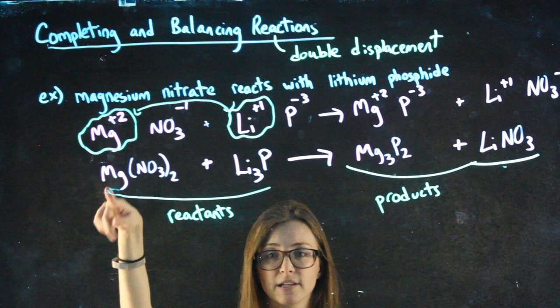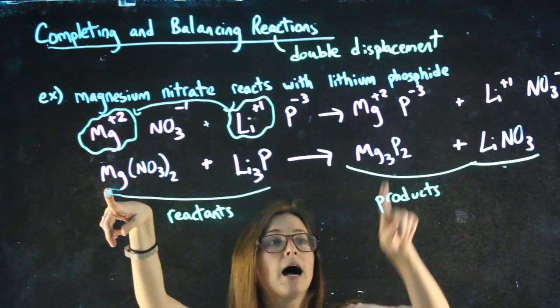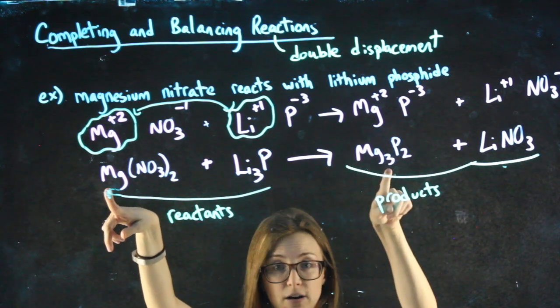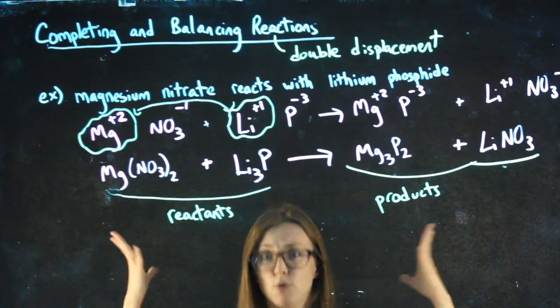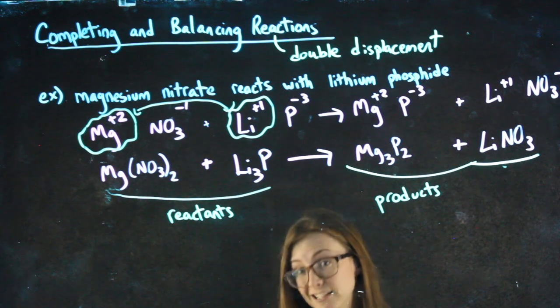How many magnesiums do I have on the left? One. How many magnesiums do I have on the right of the arrow? Three. Those are not balanced. That makes it seem like two magnesiums just poofed out of thin air. So I need to balance them.